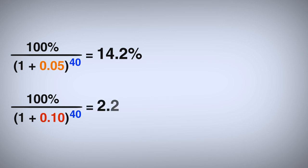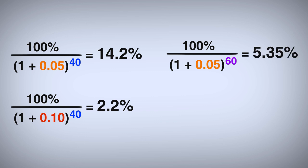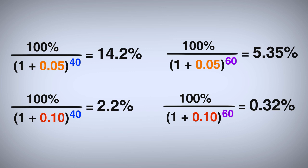Let's say we had a project that was 60 years long. It would be reduced to 5.35% at a 5% discount rate in the last year and 0.32% at a 10% discount rate. That weight we're giving to the future is so small it basically doesn't matter.